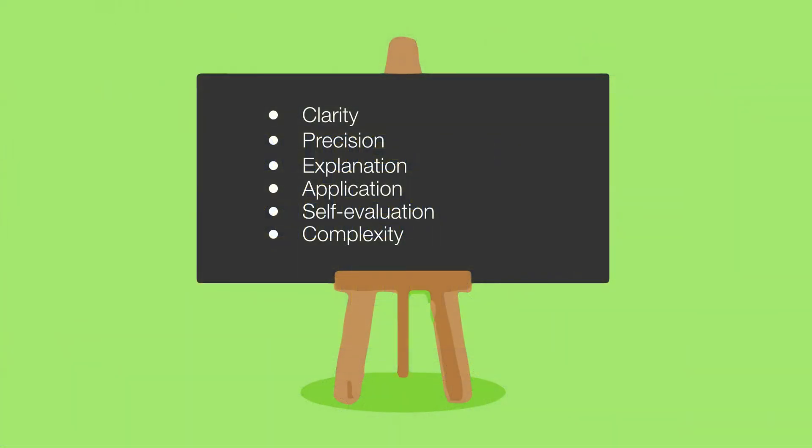The evidence for robust learning lies in six features of people's work: how clear and precise it is, the quality of explanations, the ability to apply new knowledge, the accuracy of self-evaluations, and the complexity of arguments.